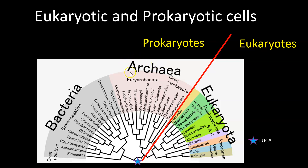A long time ago, people thought that Archaea were also bacteria and used to call them Archaea bacteria, treating them as one domain. But they changed that because of a distinct difference: bacteria have a cell wall made up of peptidoglycan — a special polysaccharide — whereas Archaea don't. That's how we separated bacteria from Archaea.